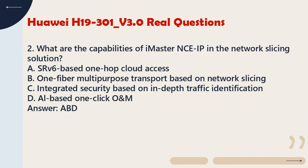Question 2: What are the capabilities of iMaster NCE-IP in the Network Slicing Solution? A. SRV-6 based one-hop cloud access. B. One-fiber multipurpose transport based on network slicing. C. Integrated security based on in-depth traffic identification. D. AI-based one-click O&M. Answer: A, B, C, D.